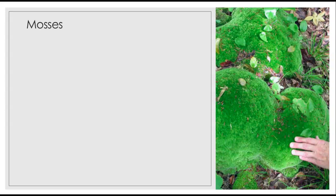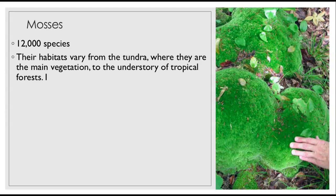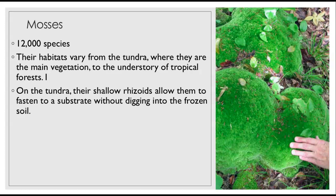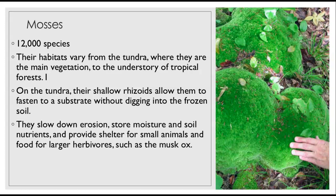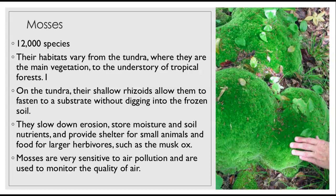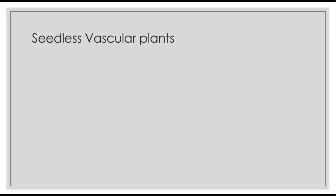Then we have the mosses, which we're probably very familiar with. There are 12,000 species of mosses, and their habitats vary from the tundra — where they're pretty much the main vegetation — to the understories of tropical forests. On the tundra, they have shallow rhizoids instead of roots, which allow them to fasten to a substrate without needing to dig into frozen soil. They slow down erosion, store moisture and soil nutrients, and provide shelter for small animals and food for larger herbivores like the musk ox. Mosses are also very sensitive to air pollution and can be used to monitor air quality.